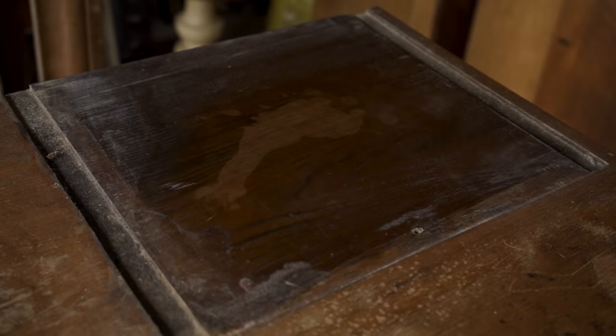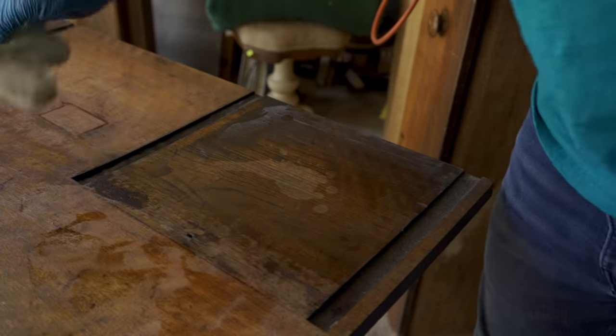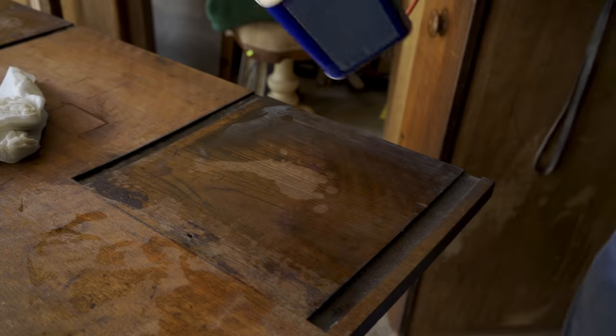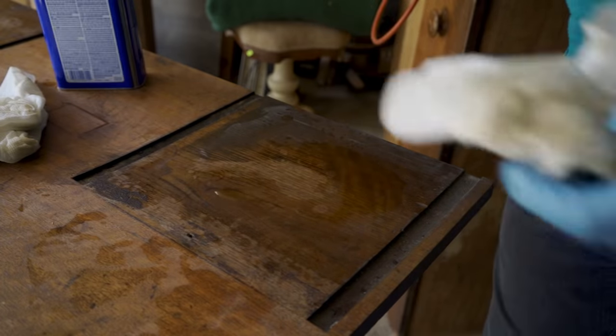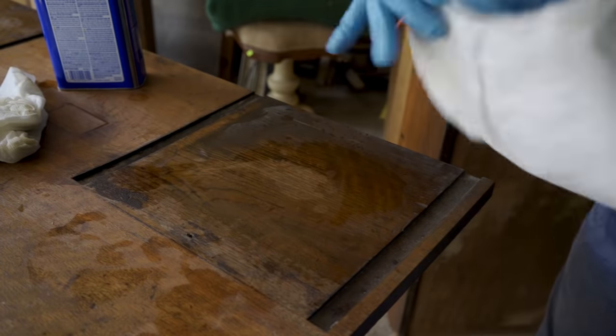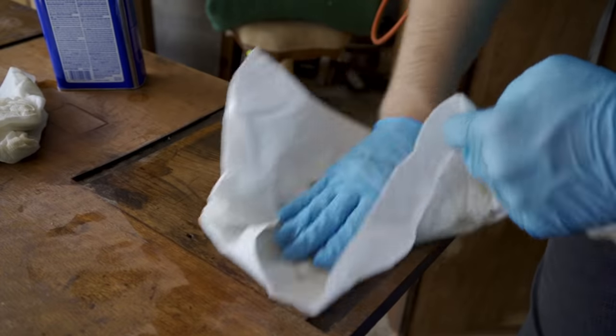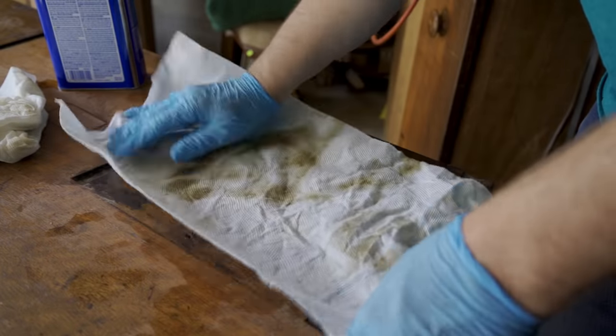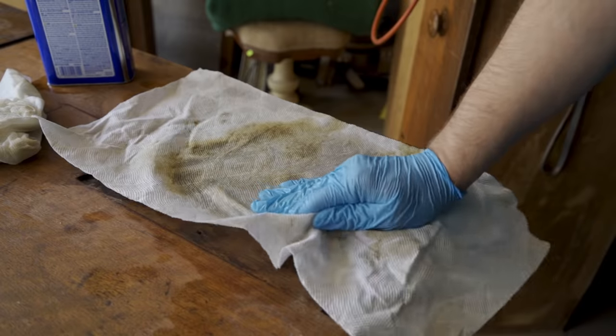So I decided instead of scraping the finish off or sanding the finish off, I would just use the denatured alcohol to remove it. In some spots, I just poured the alcohol on and scrubbed the finish off. And in other areas, I put some paper towels down and soaked them with alcohol and let it sit for a while. And then wiped it off.